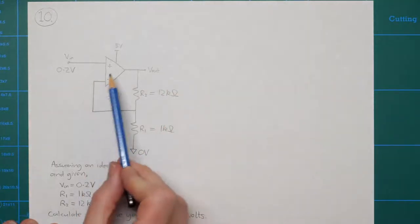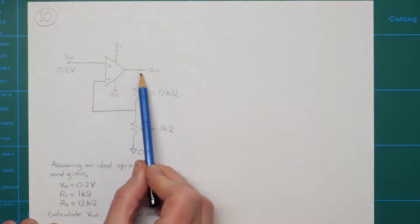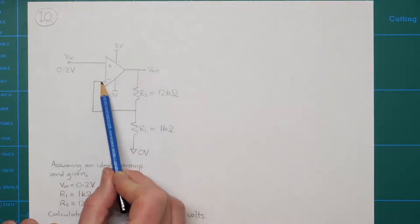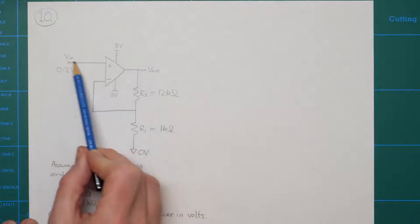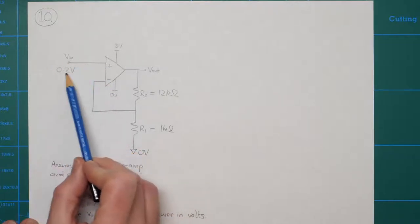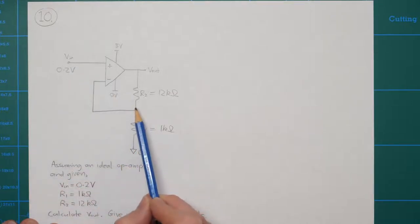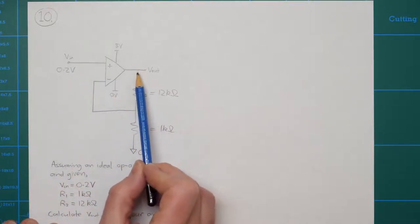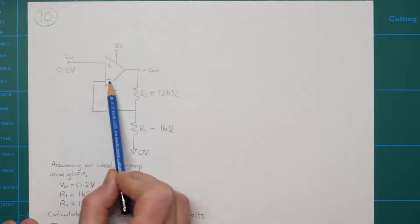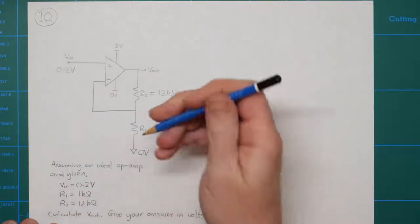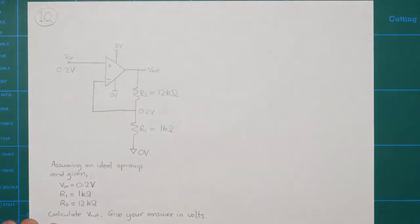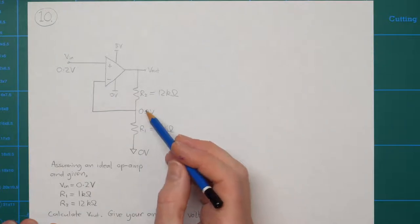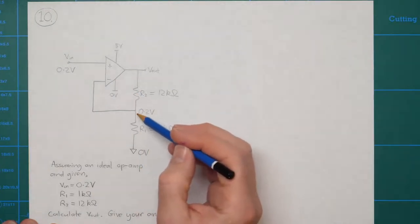The basic idea is that the op-amp pushes the voltage up or down at the output to keep the voltages at its two inputs equal to each other. The input voltage of 0.2 volts comes in, and the op-amp will do its best to achieve 0.2 volts at the inverting input node as well. Assuming it doesn't saturate, that's what we'll end up with.